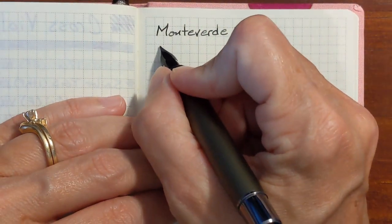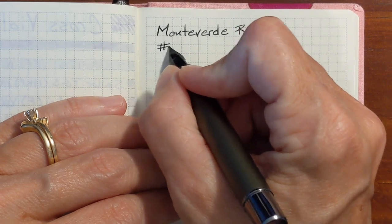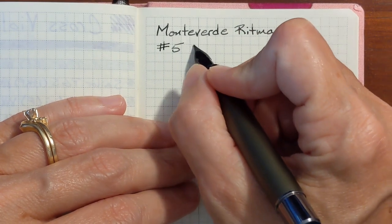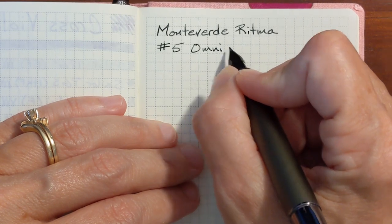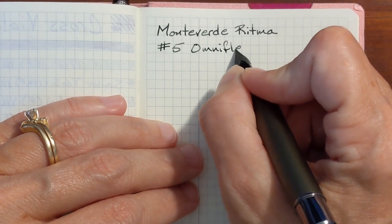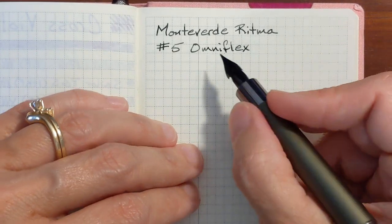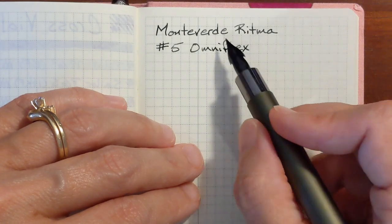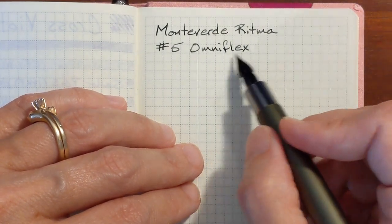Let's see. This is the number five OmniFlex. I like the amount of ink that it puts down especially with this Diamine Earl Grey.